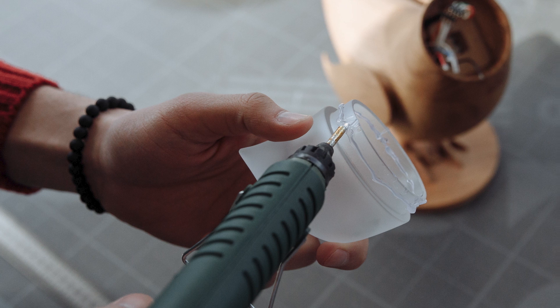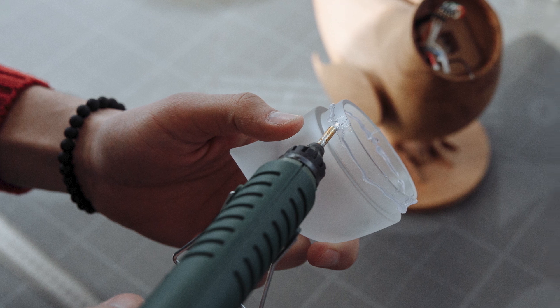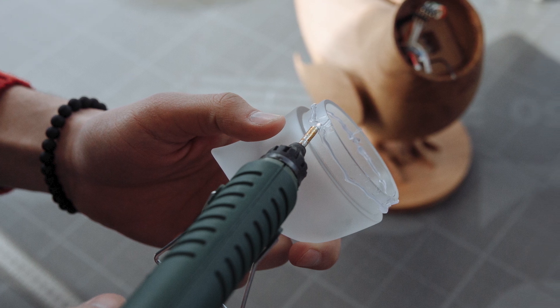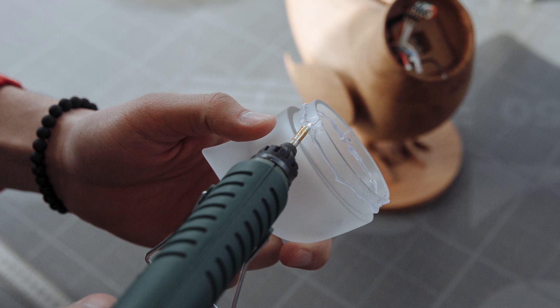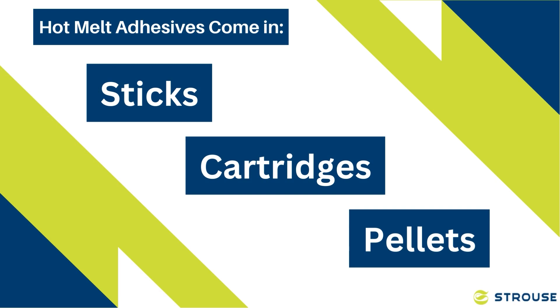Hot melt adhesives are heat-activated adhesives used for very specific applications. These adhesives come in many different forms — from sticks, cartridges, or pellets — making them very easy to store and handle. Heat-activated adhesives are great on surfaces where films tend to struggle, such as aluminum foil, polyurethane, PVC, and rubber.